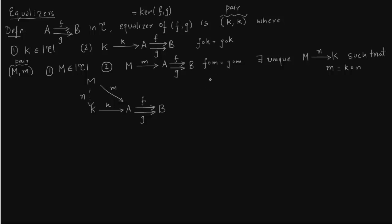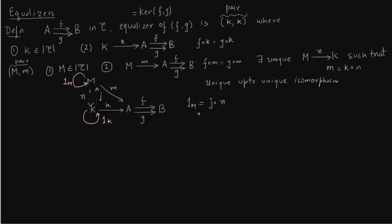The standard result is that if the equalizer of two morphisms exists, it is unique up to isomorphism. The standard trick is: draw another arrow from K to M. If both M and K are equalizers, we have an arrow N from M to K and an arrow J from K to M. We also have the identity morphisms 1_M and 1_K. Since 1_M is unique, N∘J = 1_M.